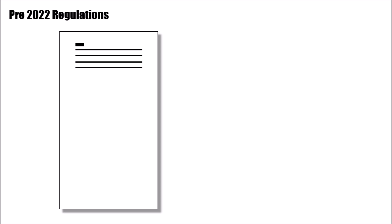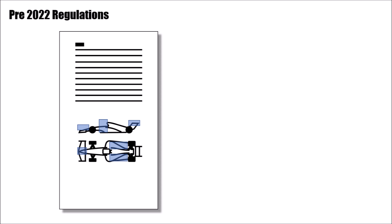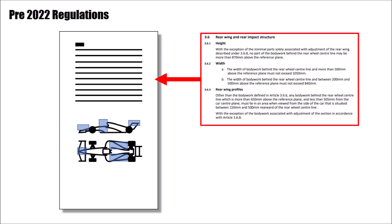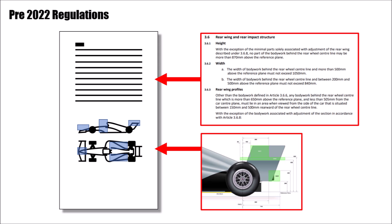Articles that described a certain part of the car got longer and more specific every year. To still understand the rules, the regulators added pictures somewhere in the middle to describe certain regulations better. For example, if I wanted to know something about the rear wing, I read the article about the rear wing and it told me all the dimensions I needed. Then additionally I could see a picture showing me these dimensions on a car.